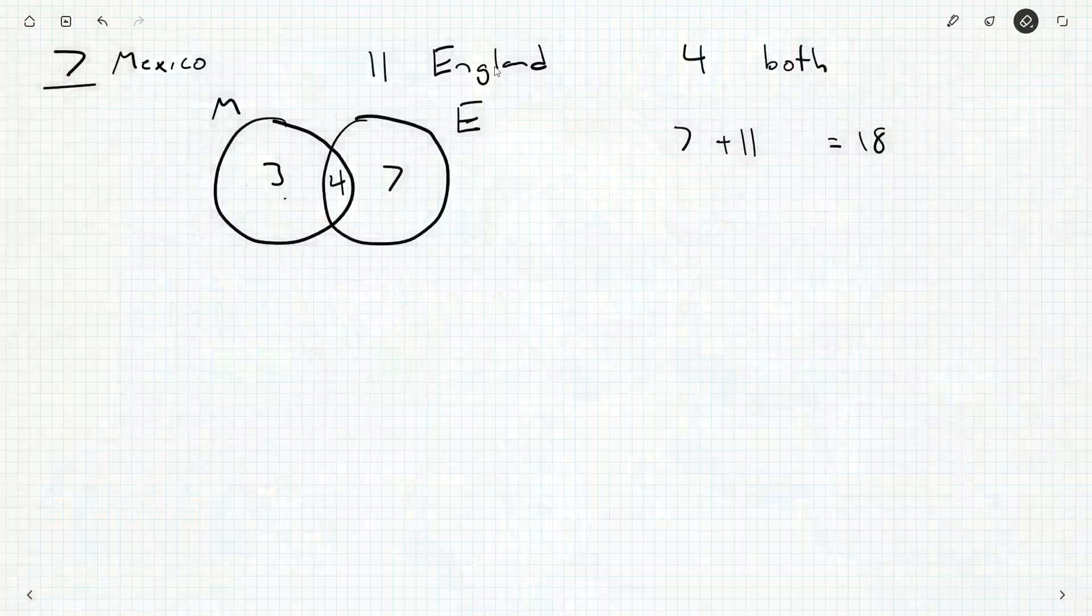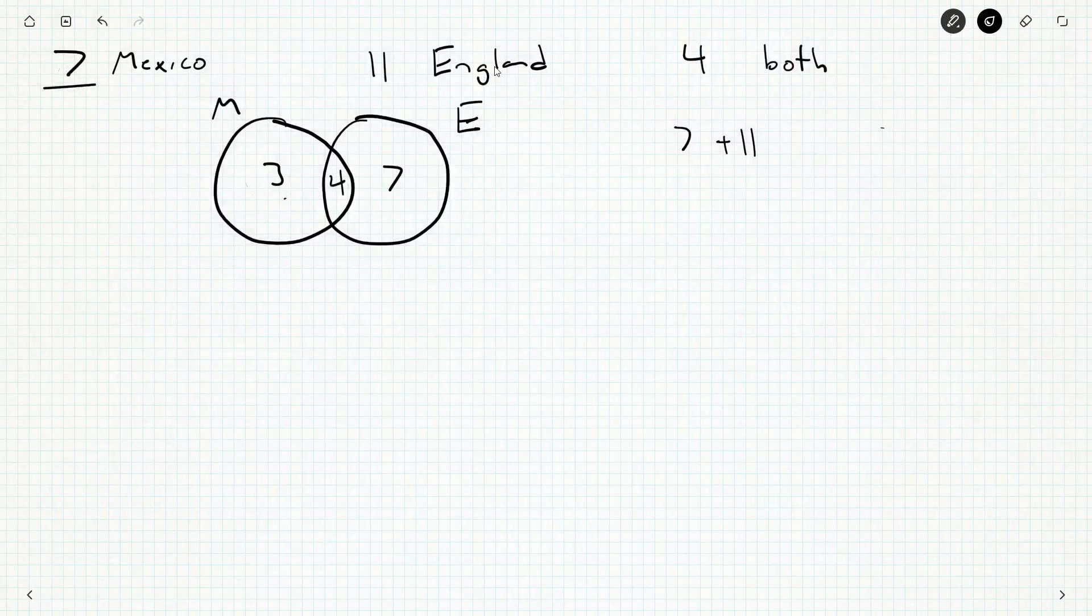And you have to account for that. You counted those four people who are in common with both groups. You counted them twice. This is a phenomenon known as double counting. And so we have to correct for that. So we don't just say seven plus 11 is 18. We say seven plus 11 minus four, because we've counted these people twice. Once when we counted Mexico, once when we counted England. And so that's actually going to be 14 have been to either Mexico or England.